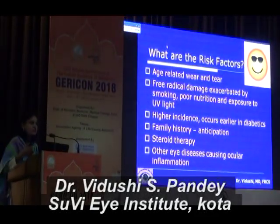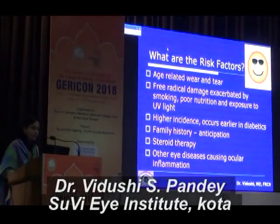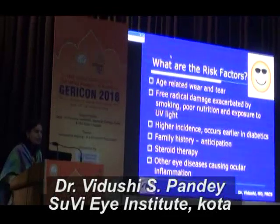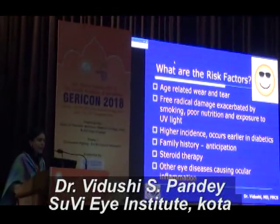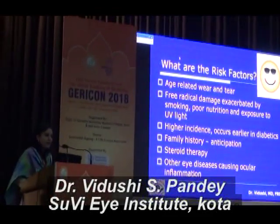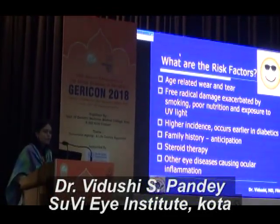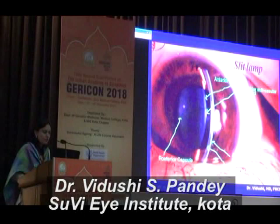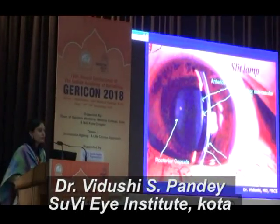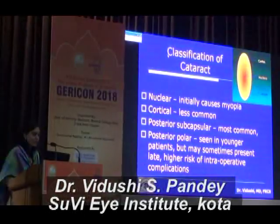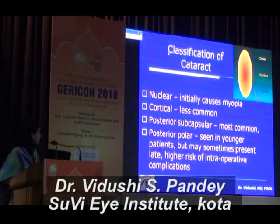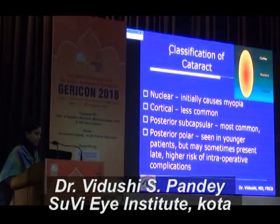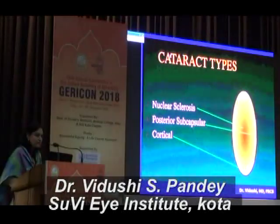If your patients had cataract at a certain age, their children are likely to have it at an earlier age. If you had steroid therapy or other eye diseases like uveitis which cause inflammation, then you are likely to develop cataract. This is a slit lamp picture. There are different kinds of cataract depending on where the cataract occurs in the lens.